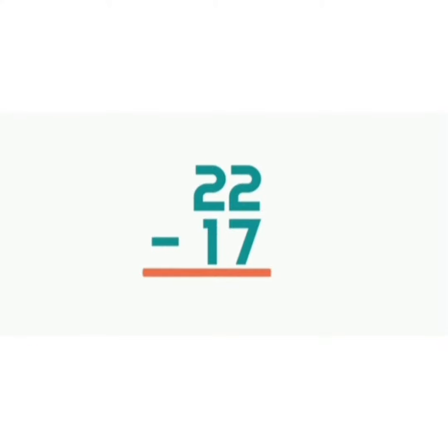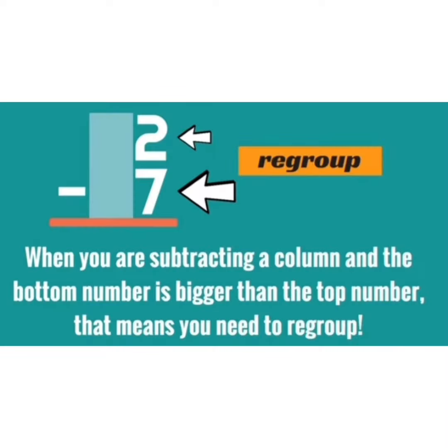Let's say you have 22 minus 17. 7 is bigger than 2, so here you need to regroup. When the bottom number is bigger than the top number, you have to regroup.